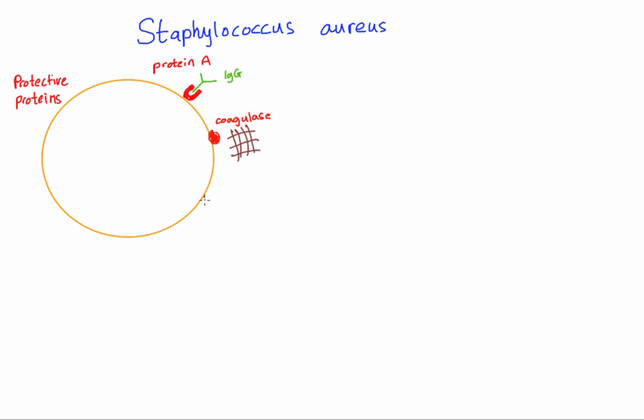The third protective protein is penicillinase. Penicillinase breaks down penicillin, so normal penicillins are not going to work against Staph aureus. However, you can use penicillinase-resistant penicillins such as methicillin. In theory methicillin should work, though sometimes it doesn't — we'll explain why shortly.